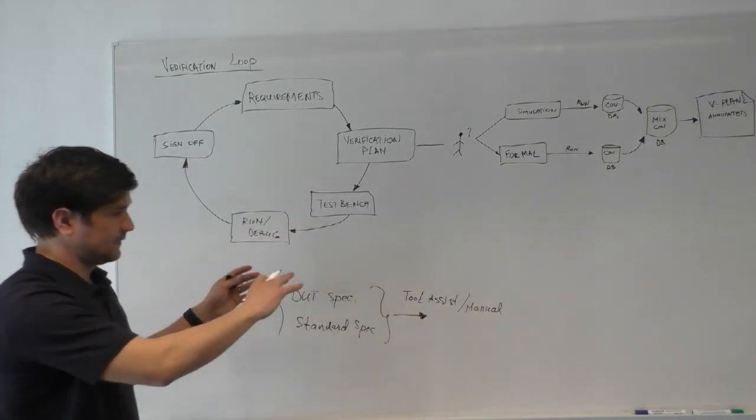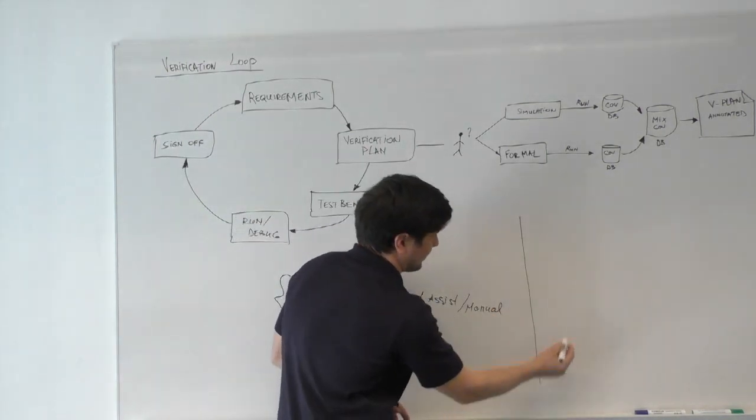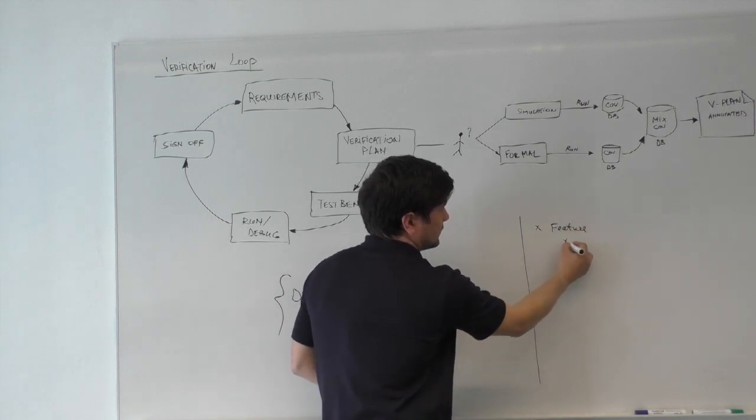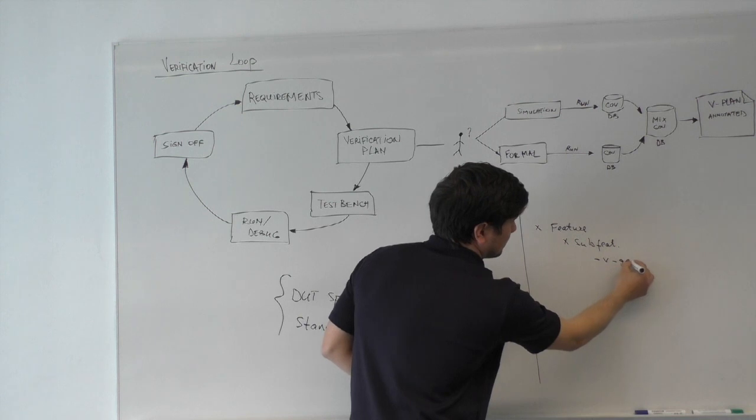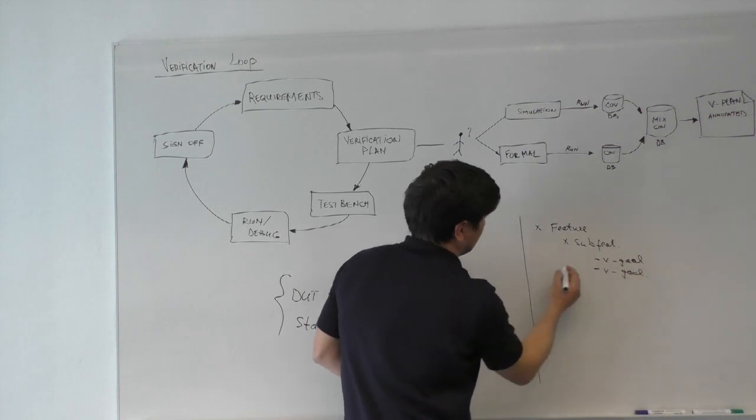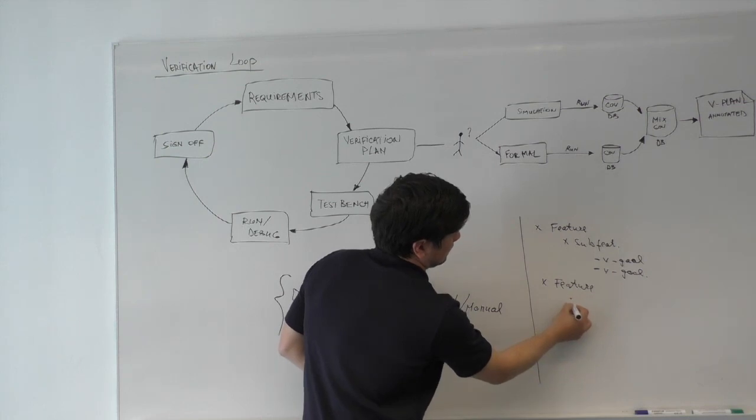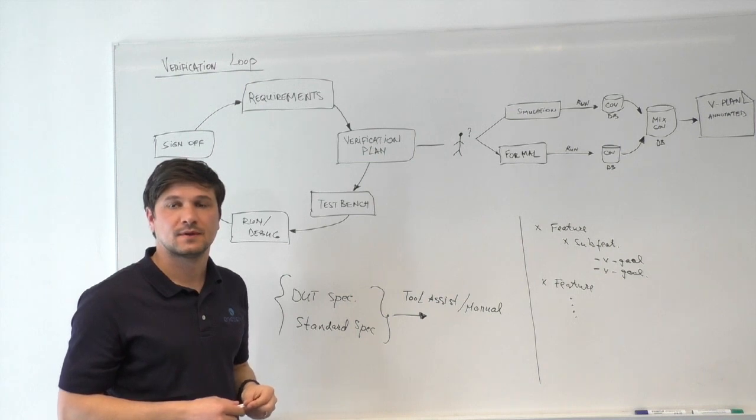What is the result of this work? It results in a verification plan where some features are described. These features can have sub-features, and for each of these there is a verification goal that needs to be achieved. It can be multiple of them with multiple features. These are really two different processes though. Do they come together at the end?